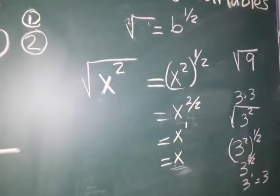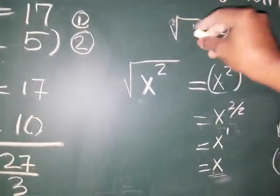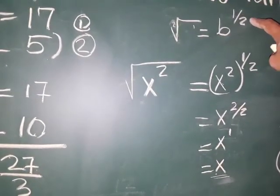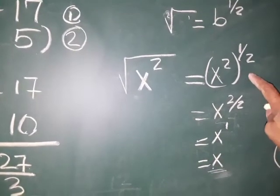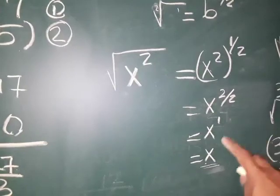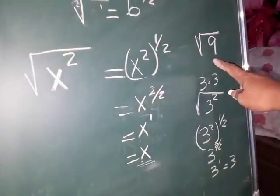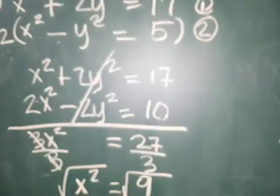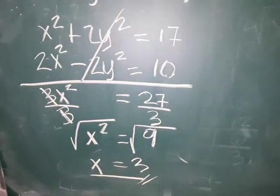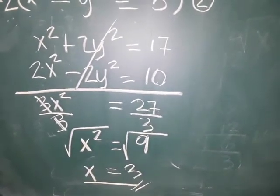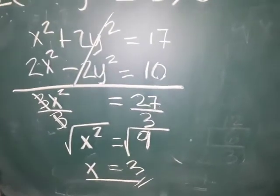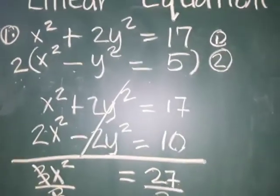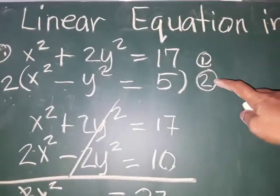I just want to clarify again: the radical sign means it is an exponent of 1 half. That's how we get the value of x when we put radicals, and also for a number. So we're going to proceed — since we have already our x, then we're going to get our y by substituting the value of x into any of the original equations.